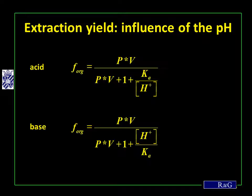For an acid, it is important to lower the pH to get better extraction yield. Lowering the pH means increasing the H⁺ concentration, and the term Ka divided by H⁺ will go towards 0 as H⁺ increases. This means P times V divided by P times V plus 1 will almost go to 1, meaning F-Org will approach 100%. For a base, it is the other way around: by decreasing the H⁺ concentration — meaning increasing the pH — the term H⁺ divided by Ka will go to 0, and F-Org will again approach 100%. So, if you want to extract an acid, go to low pH; if you want to extract a base, go to high pH.